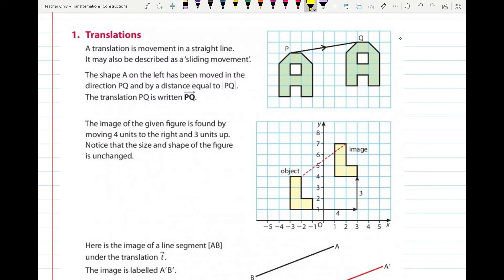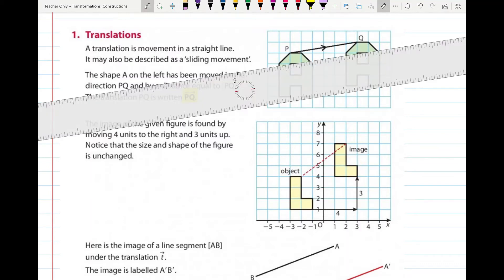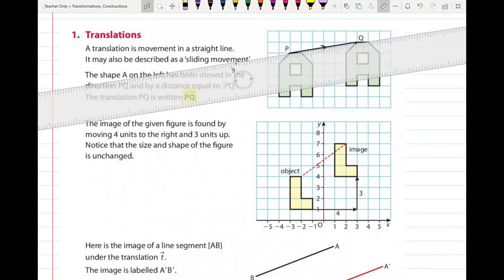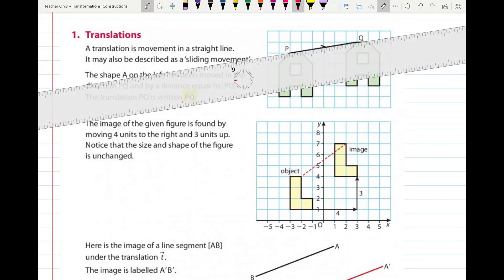The translation PQ is written as PQ with an arrow over the top of it. So that means the translation that goes from P to Q. So if we look at this a bit closer, I'll get my ruler. You can see that the point P is after travelling up to Q. So I can draw that with my line there.